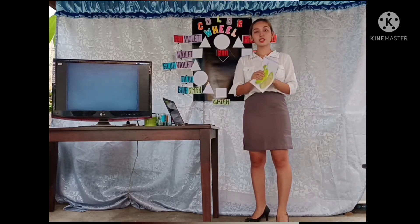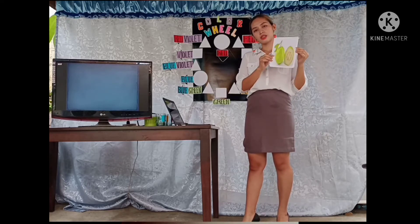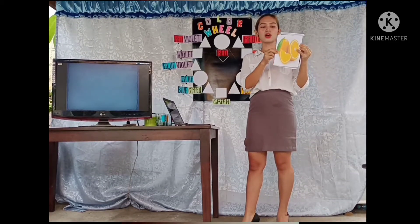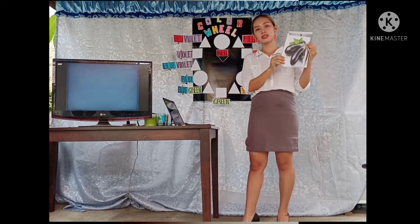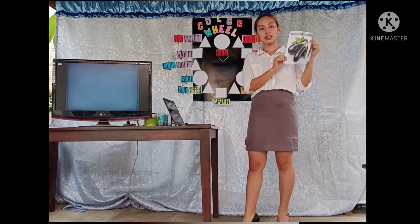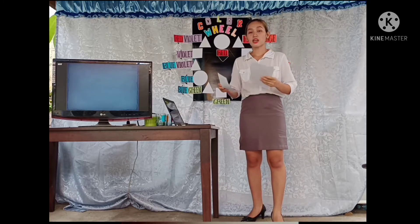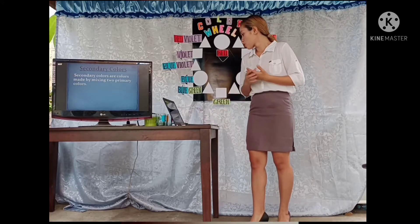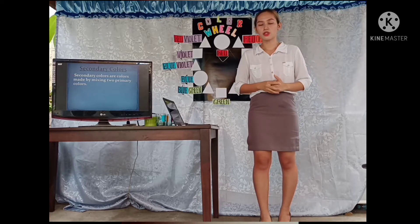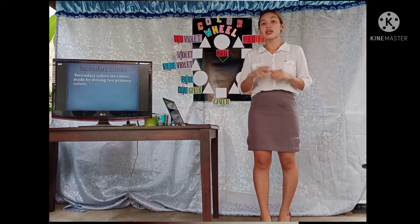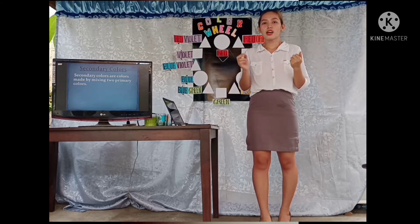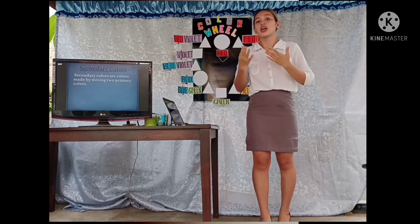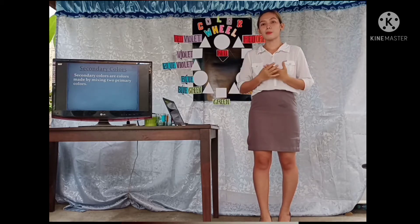How about this picture? What color is this? Green. Very good. How about this one? Orange. Very good. This one? Violet. The color of the eggplant is violet. Those three colors are considered secondary colors. When we say secondary colors, this refers to the colors that are made by mixing two primary colors. Secondary colors are the result of mixing two primary colors.